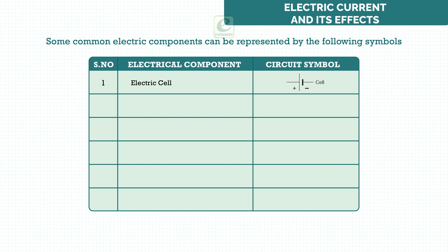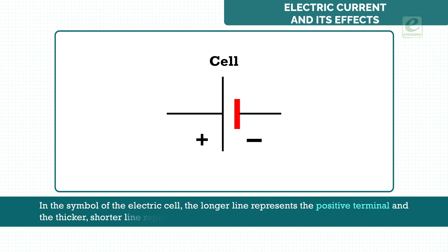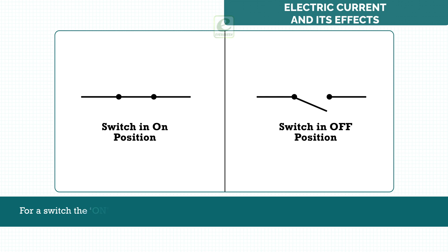Electric cell, electric bulb, switch in on position, switch in off position, battery, wire. An electric cell is represented by a longer line and a shorter, thicker parallel line. In the symbol of the electric cell, the longer line represents the positive terminal and the thicker, shorter line represents the negative terminal. For a switch, the on position and the off position are represented by the symbols as shown.